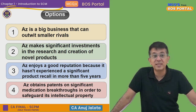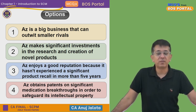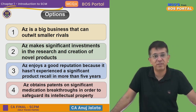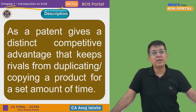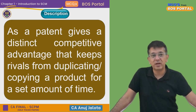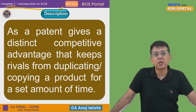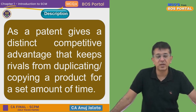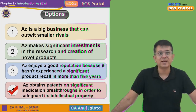Honestly, all four options give you a competitive advantage. But if I have to select one, the last one — patents — gives you the maximum advantage, because it ensures no competition can copy you, so you automatically have a competitive advantage. As ICAI states, a patent gives a distinct competitive advantage that keeps rivals from duplicating or copying a product for a set amount of time. So the answer is option four.